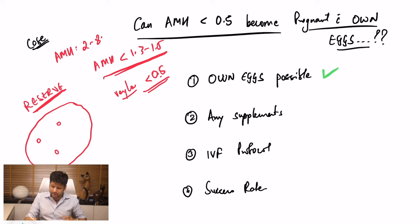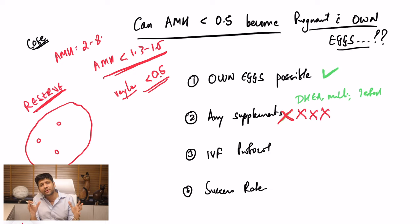Kya is cheez me koi supplements, jaise ki aapne commonly suna hoga, DHEA, multivitamin, testosterone, kya ye sare supplements is value of AMH pe kaam karte hai ya nahi? To us cheez ka answer hai no. At value of less than 0.5, aapko koi bhi supplement nahi lena chahiye, because most of the supplements are going to have virtually less than 2% effect. Matlab, woh kaam karne ki shakti 2% se bhi kam.